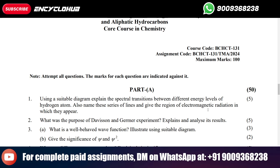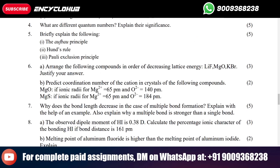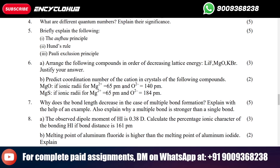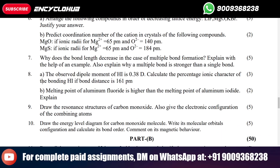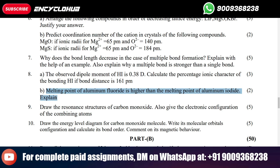Hey guys, welcome back. Today we will see BG-HCT-131 assignment. The question is: the melting point of aluminium fluoride is higher than the melting point of aluminium iodide — explain. This question goes for two marks only.